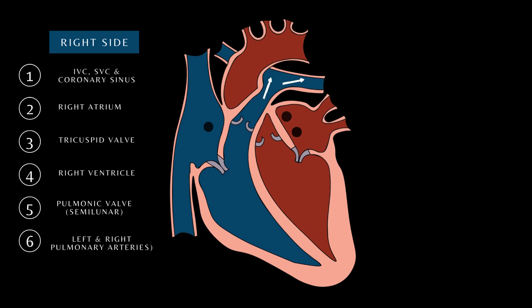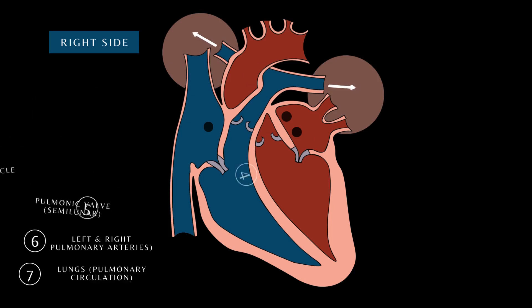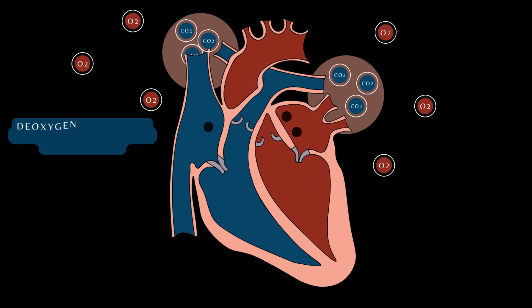Blood moves to the pulmonary trunk and into the left and right pulmonary arteries where it enters the pulmonary circulation. Here gaseous exchange takes place as carbon dioxide diffuses out and oxygen diffuses into the bloodstream.